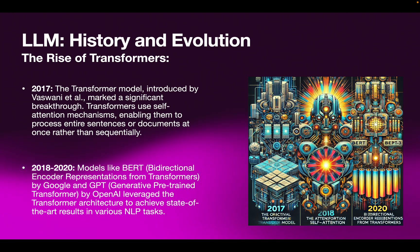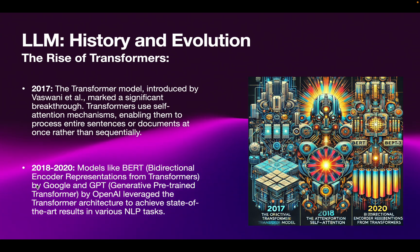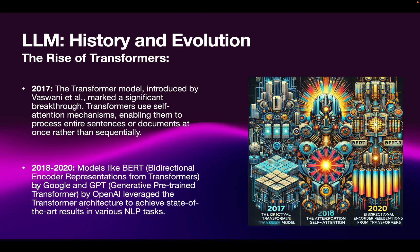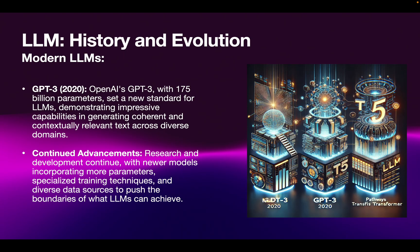In 2018 and into 2020, models like BERT — Bidirectional Encoder Representations from Transformers, introduced by Google — and GPT — Generative Pre-trained Transformer, released by OpenAI — were built on the Transformer architecture to achieve state-of-the-art results across various NLP tasks. These represented the first major wave of modern large language models.